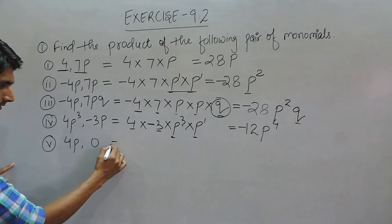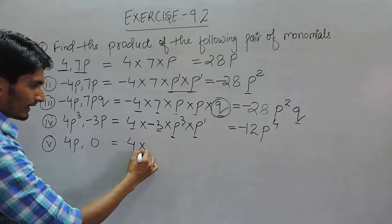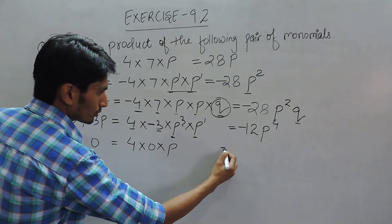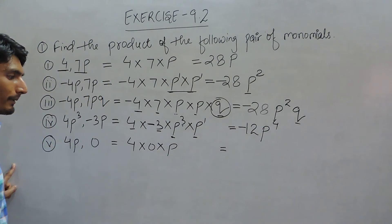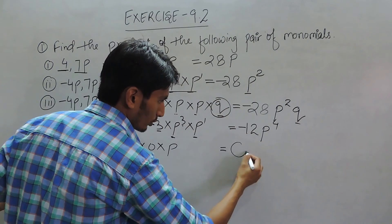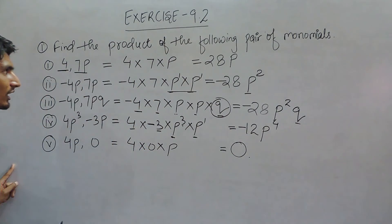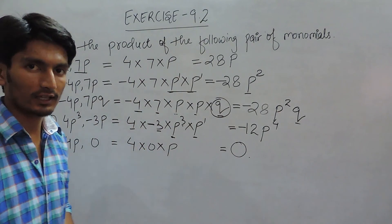In this case, when 4 is multiplied by 0 multiplied by P, we know that something multiplied by 0 is 0. That is how we can multiply these monomials. Thank you.